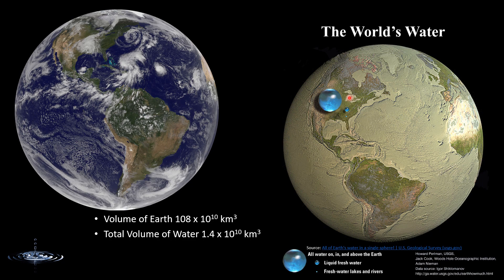Most of the fresh water is in the form of groundwater and polar ice and snow, and these two represent more than 98% of fresh water. The smaller marble here represents liquid fresh water. The smallest sphere represents fresh water in lakes and rivers — the water that supports most land animals, including humans, and other aquatic animals and plants that need fresh water to survive.